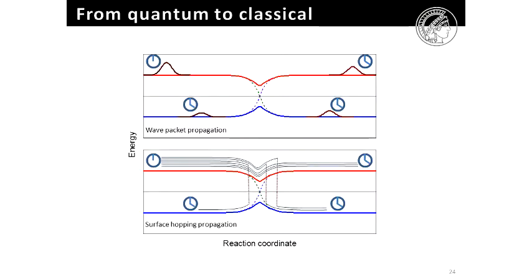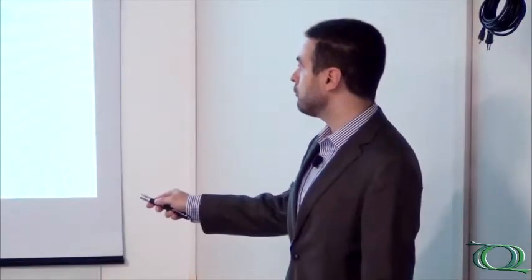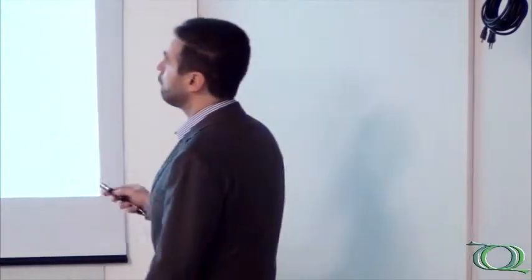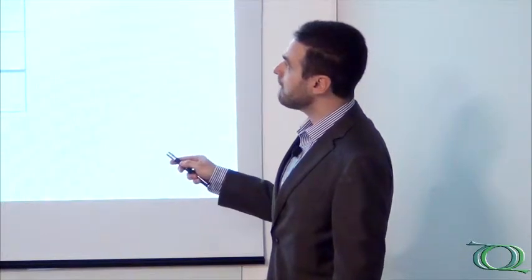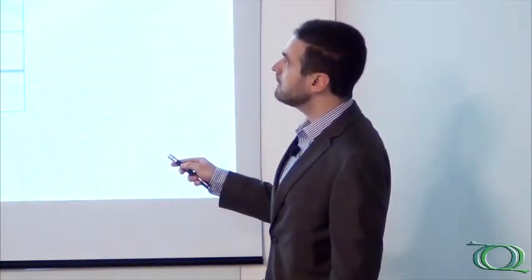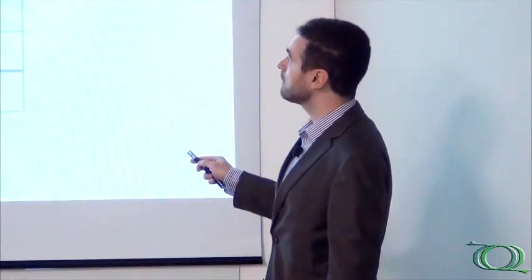But if I make classical trajectories on a Born-Oppenheimer surface, those classical trajectories always go over a single surface. But I know that in the region of non-adiabatic coupling, that the wave packet here, it splits, and then I can find my molecule in several different asymptotic levels. And I need to take this into account to have a non-adiabatic process.